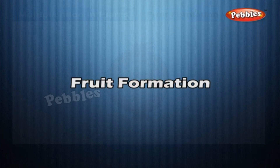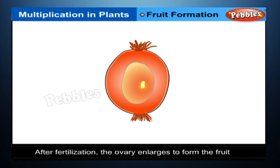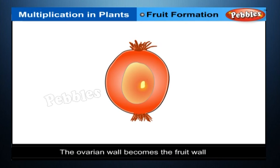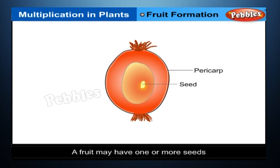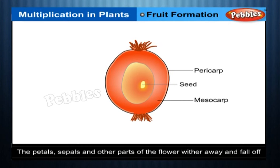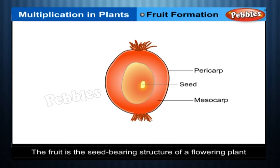Fruit formation: after fertilisation, the ovary enlarges to form the fruit. The ovarian wall becomes the fruit wall, called the pericarp. The ovules become the seeds. A fruit may have one or more seeds. The petals, sepals and other parts of the flower wither away and fall off. The fruit is the seed-bearing structure of a flowering plant and is technically the ripened ovary of the plant.